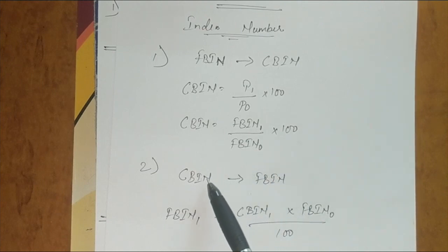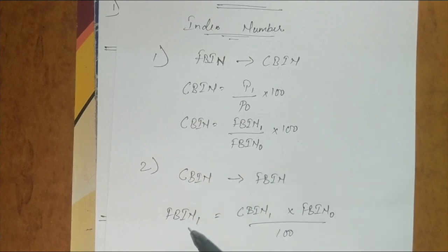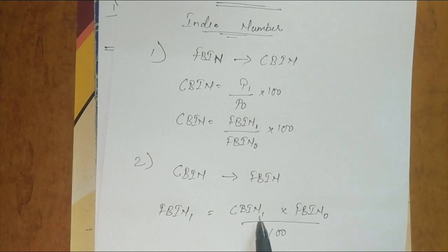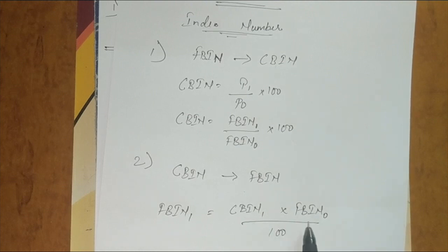Next, CBN to FBN conversion—what is the formula? FBN equals to CBN of current year into FBN of previous year divided by 100.